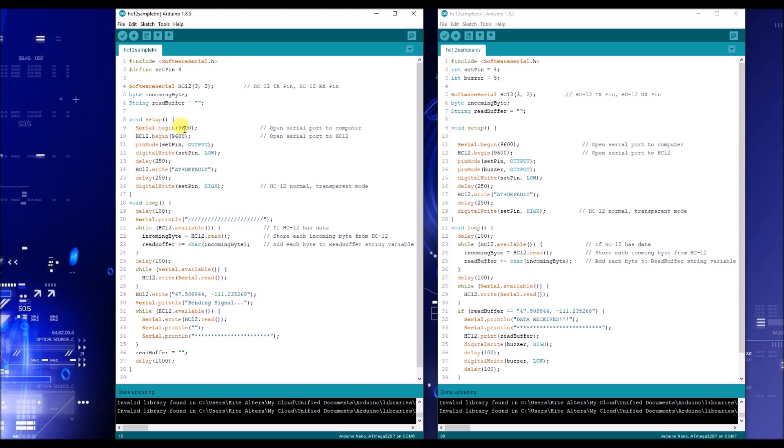So first, you want to go ahead and begin your serial and your HC12. You want to set your pin mode, your digital write. So this is what happens. If you're trying to set command mode, you want to have your set pin as being low, then you always want to wait at least 100 milliseconds. Here I have HC12.write and I have in parentheses AT plus default. So I'm going to have attached to the description of this video, the link that tells you how all these AT commands work for the HC12. But you want to make sure you have it low, then you want to have it write whatever the command is, which in this case is default, and then it'll automatically switch the HC12 into its default parameters.